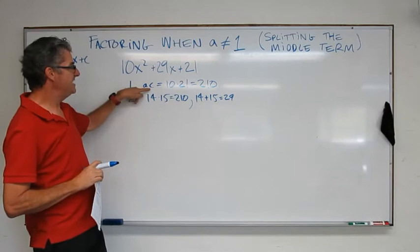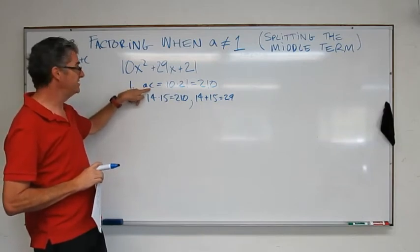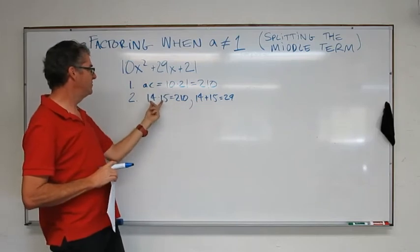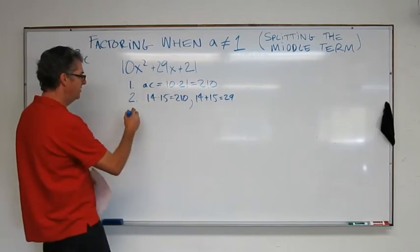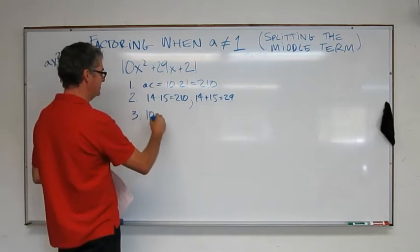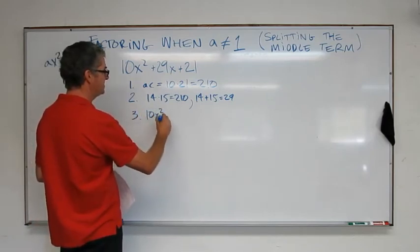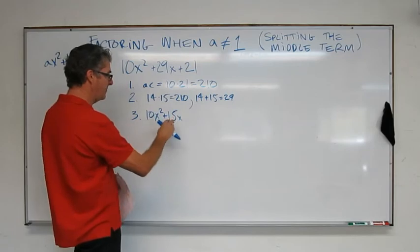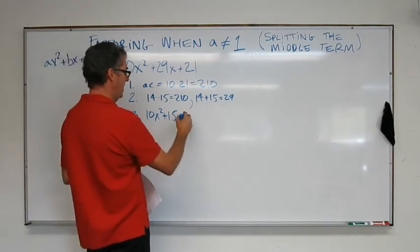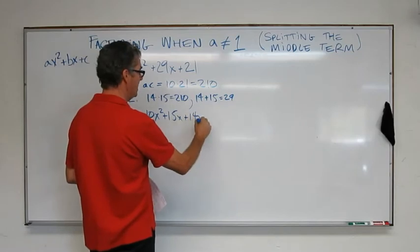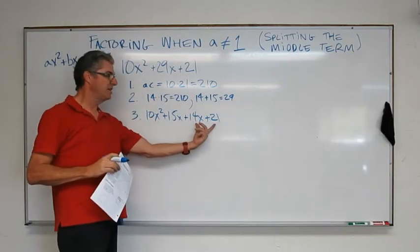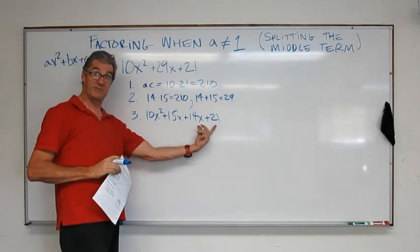Remember, they multiply to AC because they're factors of AC. But they add to my B term. So here's my two numbers, 14 and 15. So 3, I split the middle term, 10x squared plus 15x. And I put the 15 here because 5 is in both of those. And then we have plus 14x plus 21. And this works out well because 3 can be factored out of both of those. Okay.